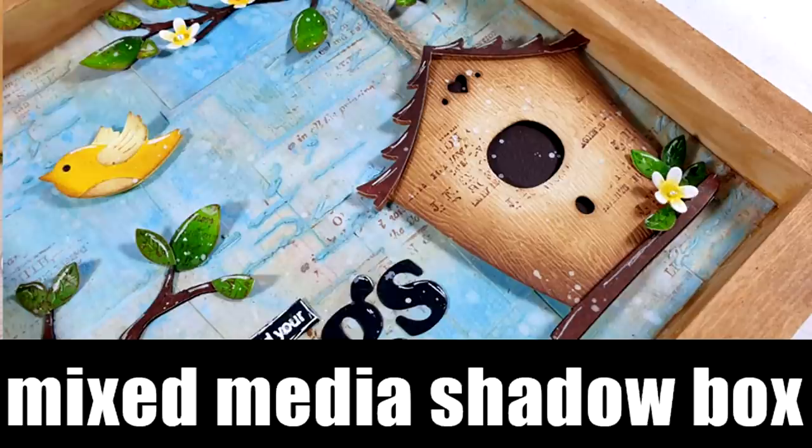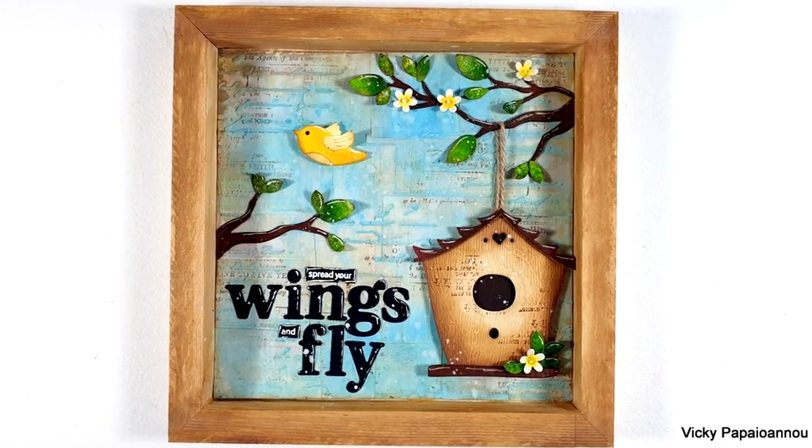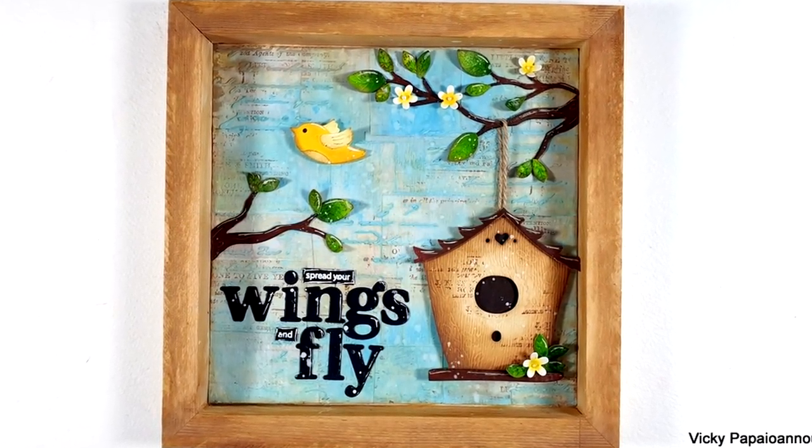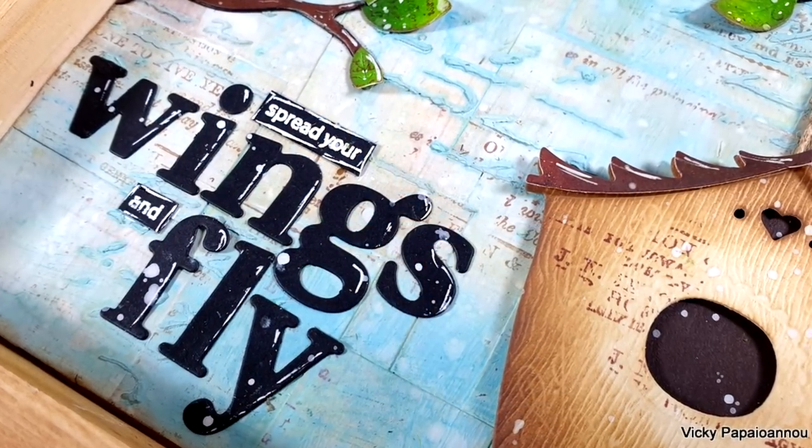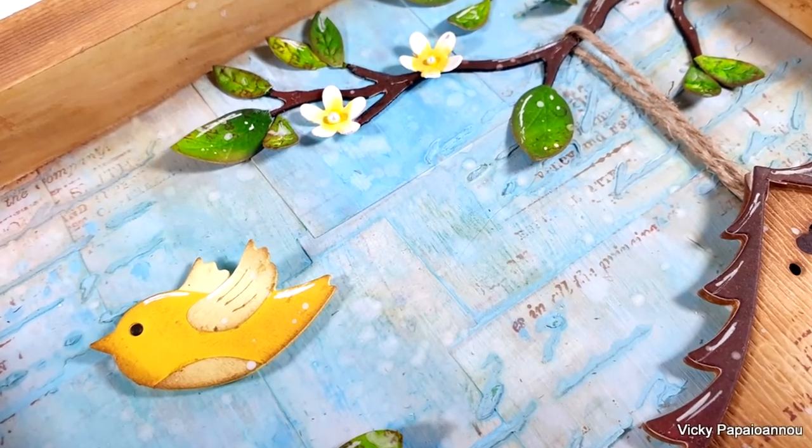Hi everyone and welcome back to another Mixed Media Tuesday. Today I'm going to create a shadow box which is perfect for spring. I'm going to play with products from my latest release for Spellbinders, which is called Bird Houses Through the Seasons, and I'm going to play with lots of mixed media techniques.